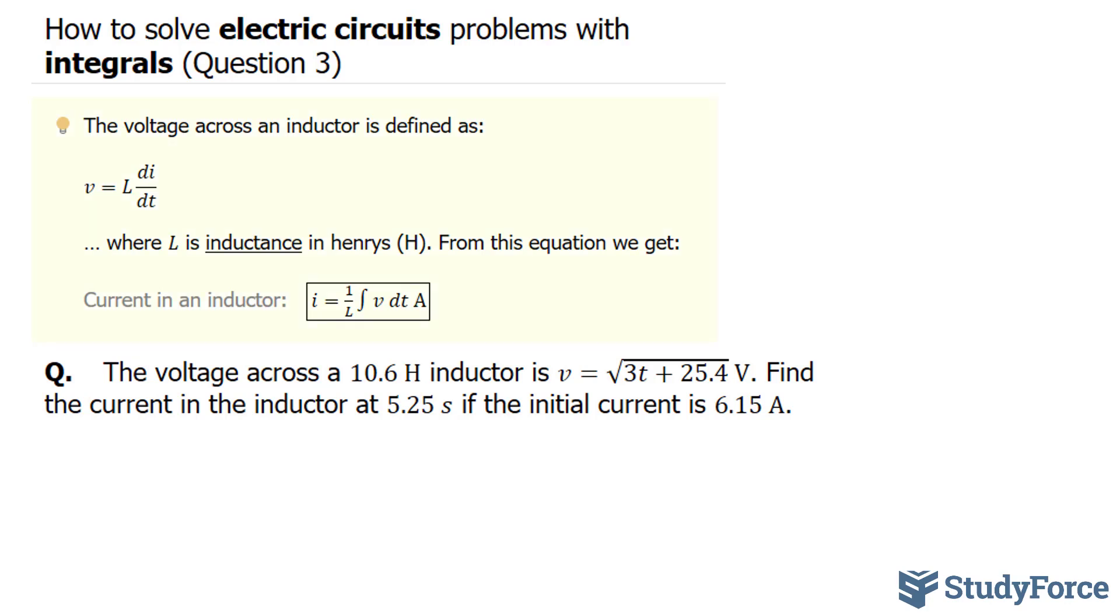To do this question, you'll need to know the following relationship. The voltage across an inductor is defined as v is equal to L, where L represents the inductance, times the derivative of the current with respect to time. From this equation, we get the current in an inductor formula, where current is defined as 1 over L times the integral of v dt, and the units are in amperes.